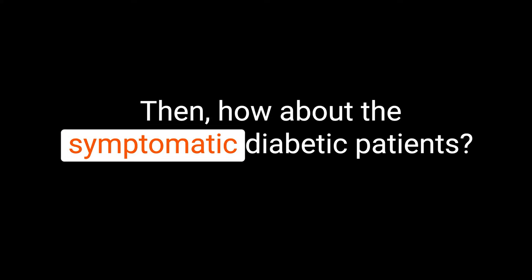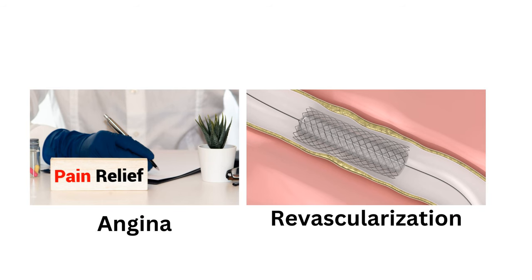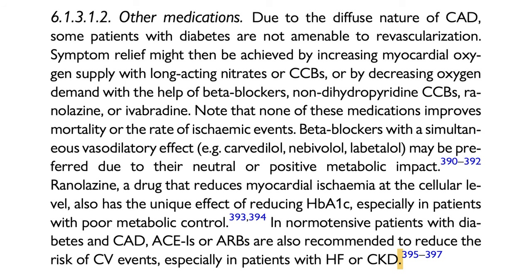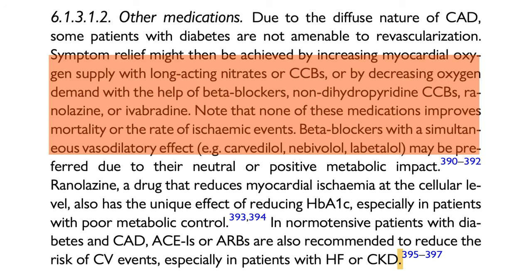How about the symptomatic diabetic patients? For symptomatic diabetic patients, in addition to risk factor control, we need to consider two important aspects of care: symptom relief and revascularization. For symptom relief, we have options like nitrates, ivabradine, and calcium antagonists.